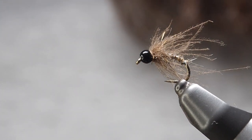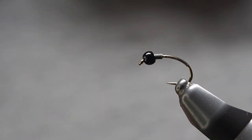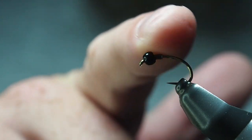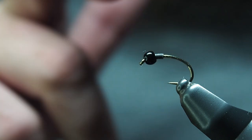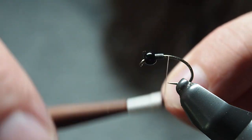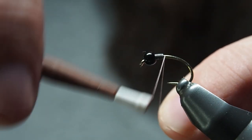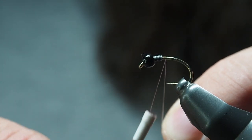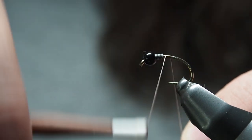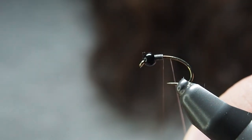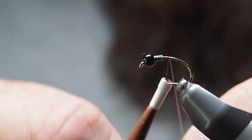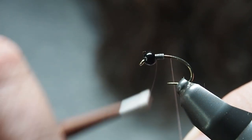Starting off here, we've got our 3.5mm tungsten bead with about 8 to 10 wraps of lead. Get your thread started. I'm using Semperfli Nano Silk in brown, 30 denier. You just want to get your base layer of thread down here and get some over top of that lead as well, get it all secured in place.